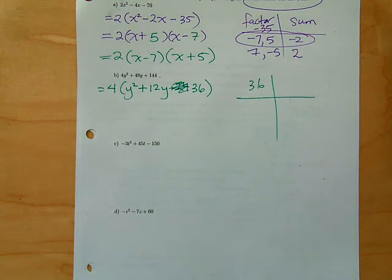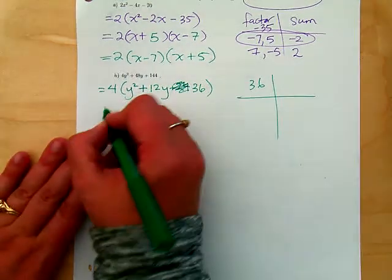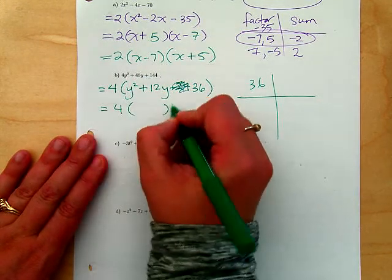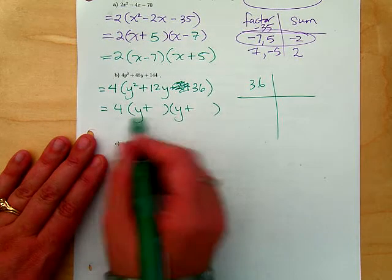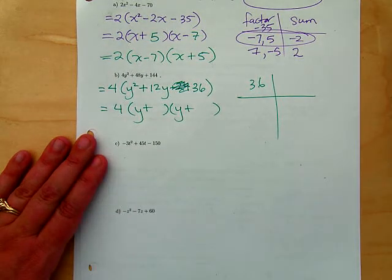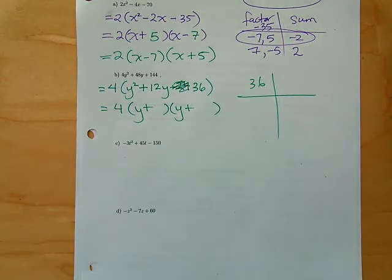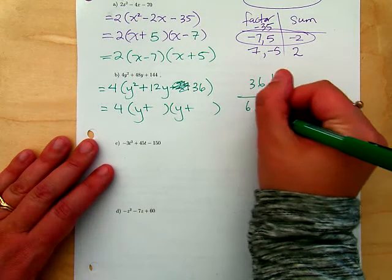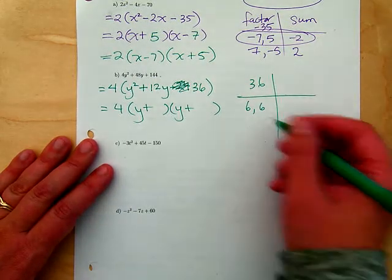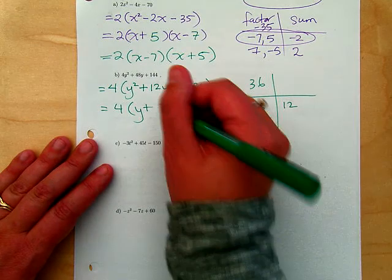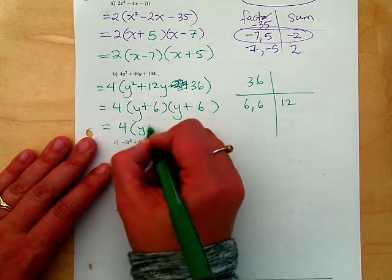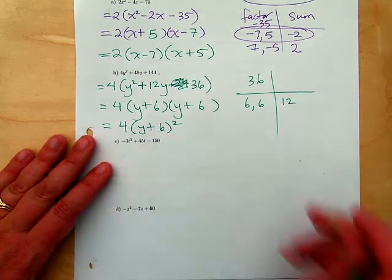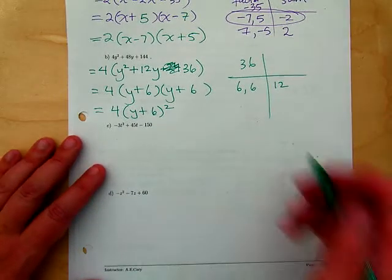36. Give me two numbers. Tell me what you know about the signs. They both have to be positive. This won't matter what order. Y plus 6 and y plus 6. 6 times 6 gives me 36, 6 plus 6 gives me 12. You could also write this as 4 times (y plus 6) squared.